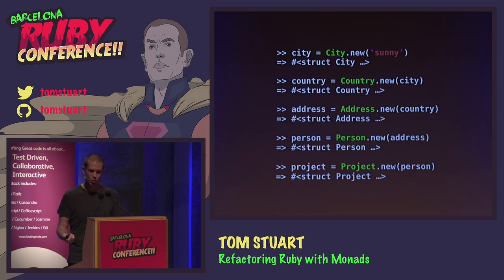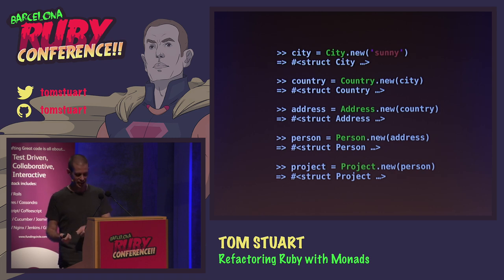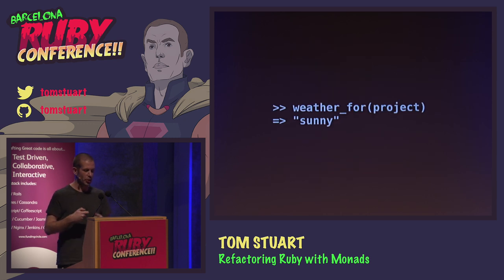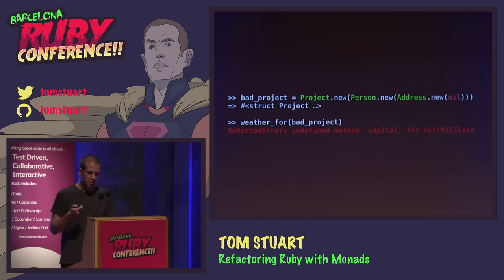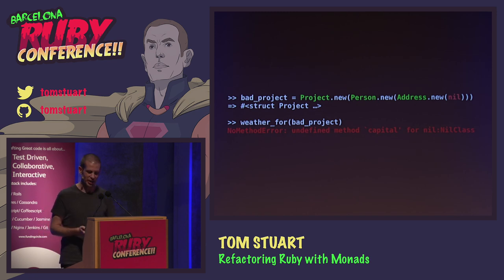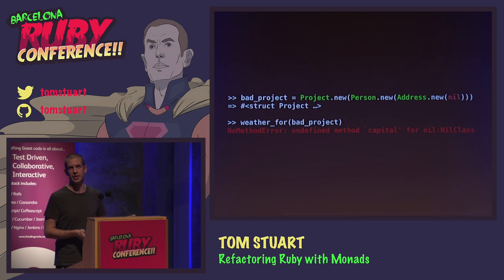If we make a city with sunny weather, a country with that city as its capital, an address in that country, a person with that address, and a project created by that person, we can pass that project into weather_for and it works fine. But if we make a bad project — for example a project with an address that has no country — then weather_for blows up. Tony Hoare invented nils in 1965, and he now calls it his billion-dollar mistake, which he says has probably caused a billion dollars of pain and damage, and this is exactly the sort of thing he's talking about.